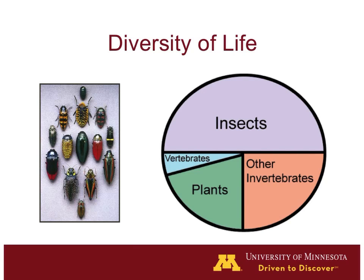We're going to focus on the class Insecta for two main reasons: they're important pollinators, and they really make up the vast majority of life on Earth. This pie chart shows different groups of organisms — relatively very few species are vertebrates, a few more are plants, about a quarter are invertebrates, and about half of all species on Earth are insects. There are about 750,000 named insect species, making up roughly half of all life on Earth — they're an incredibly diverse group.